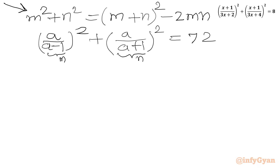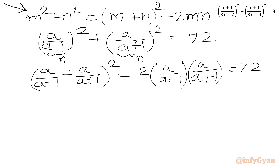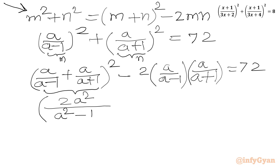So we write (m plus n) whole squared: that is [a over (a minus 1) plus a over (a plus 1)] whole squared, minus 2 times m times n, which is [a over (a minus 1)] times [a over (a plus 1)], equal to 72. Now we simplify the bracket first by taking LCM. We get a squared plus a plus a squared minus a in the numerator, giving 2a squared. In the denominator, (a plus 1)(a minus 1) equals a squared minus 1 by the difference of two squares formula. Then we write the whole expression squared, minus 2a squared over (a squared minus 1).